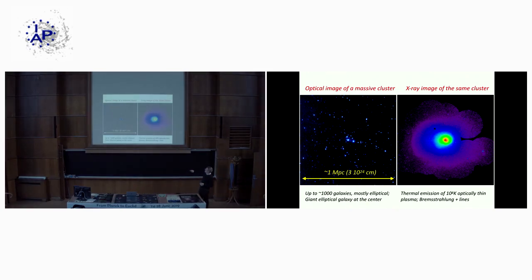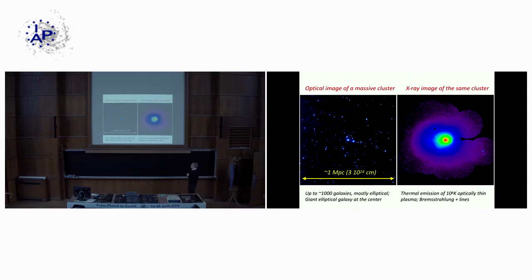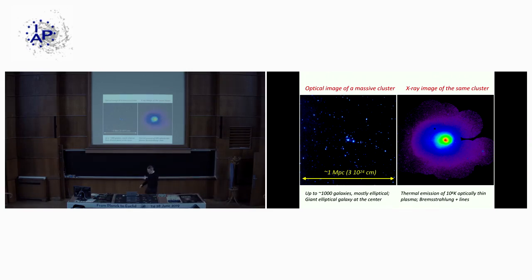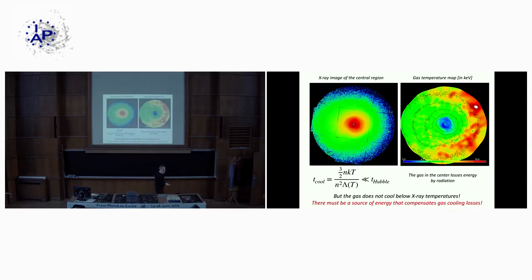A typical cluster looks like this in optical and X-ray. The Perseus cluster spans roughly one megaparsec; the central galaxy NGC 1275 is a famous object across all wavebands. In the X-ray image, the gas fills the potential well, is shock-heated and compressed, emitting X-rays. The spectra confirm thermal emission from gas at roughly 100 million degrees — thermal bremsstrahlung plus ion lines characteristic of that temperature. From this we can determine gas density directly from the flux and temperature from the spectra.